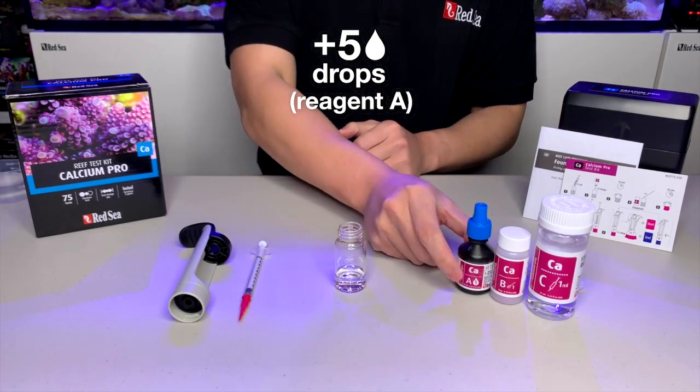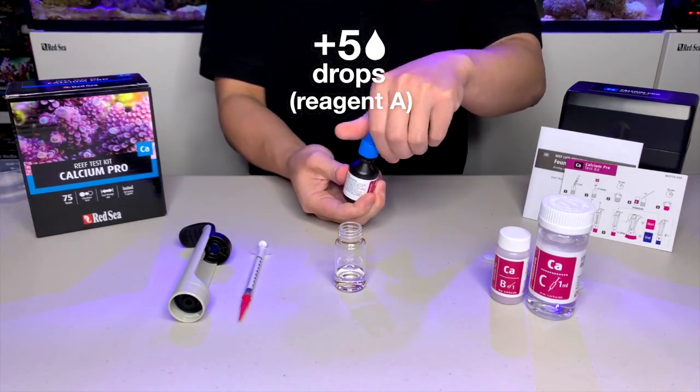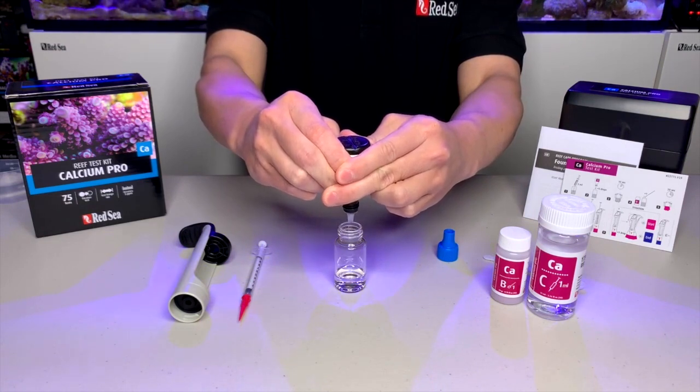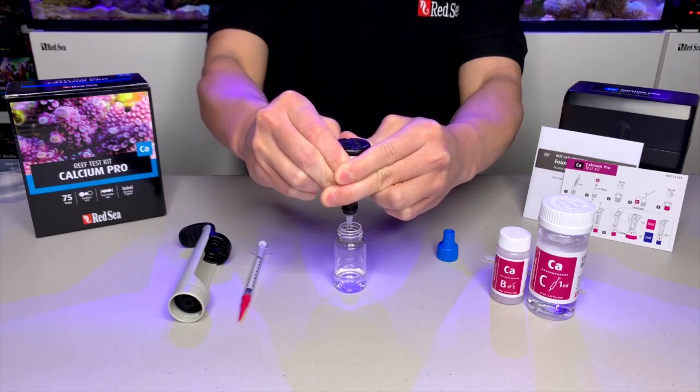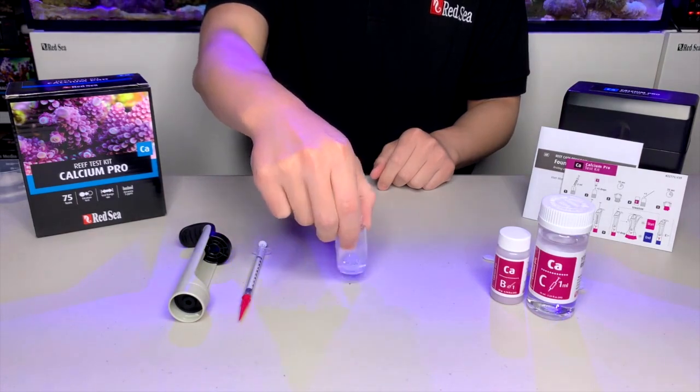Then add 5 drops of reagent A into the vial. Make sure the bottles are completely upside down so we can ensure they are full drops. Then we shake the vial gently for 10 seconds.